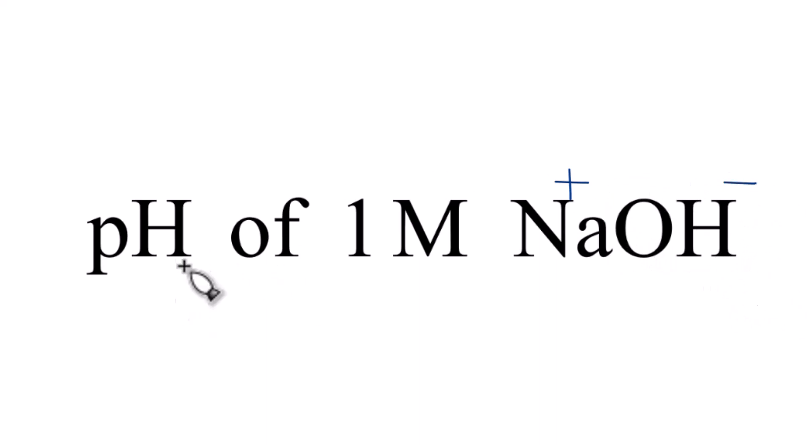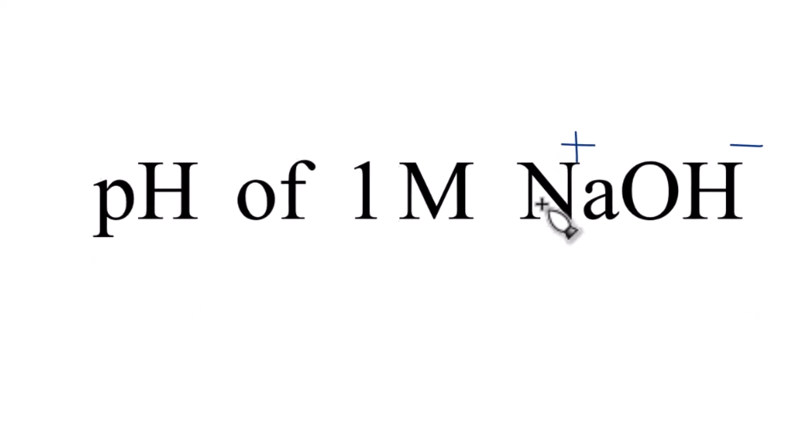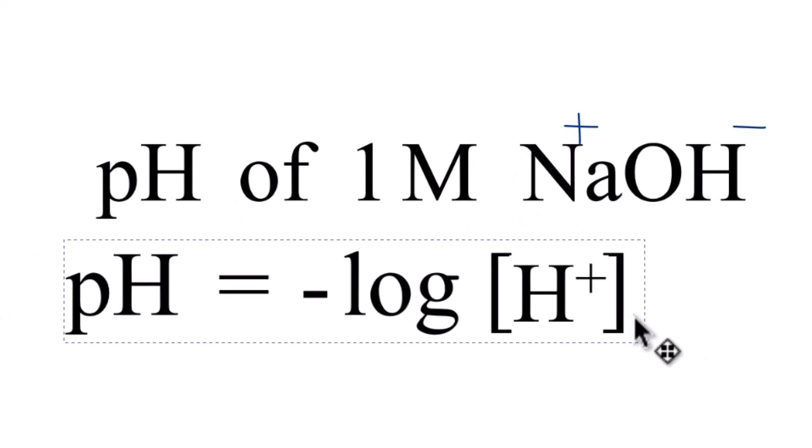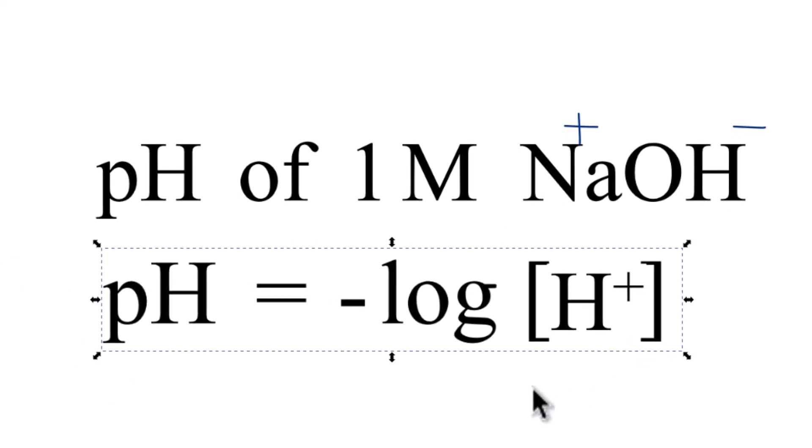When you try to find the pH of 1 molar NaOH, you might try to use this equation: pH equals the negative log of the H+ concentration. But we don't have any hydrogen ions here. This is a base because we have a metal and a hydroxide group. We don't have H+, we have OH-.